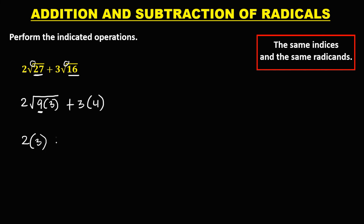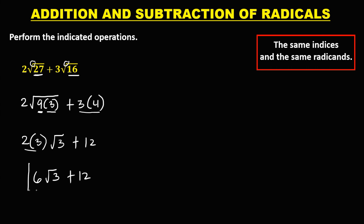The square root of 9 is 3, and we still have the remaining square root of 3, then plus 3 times 4, which is 12. So we have 2 times 3, which is 6, giving us 6√3 plus 12. Since these are not the same radicands, this is now the final answer: 6√3 + 12.